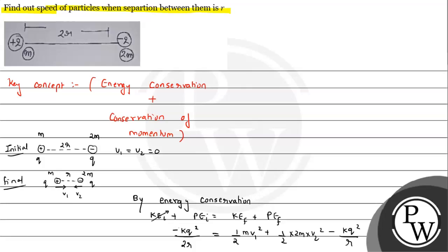This is how we can apply the energy conservation. We can simplify: k q squared upon 2r minus k q squared upon r equals half m v1 squared plus m v2 squared.